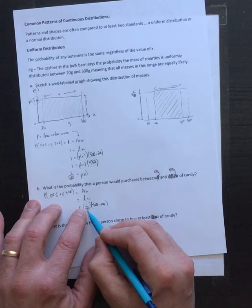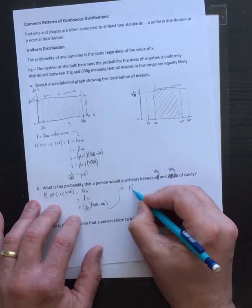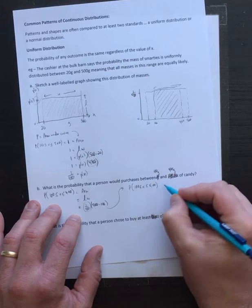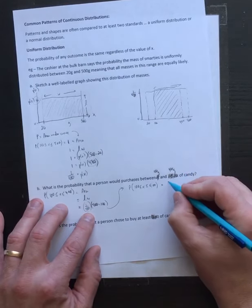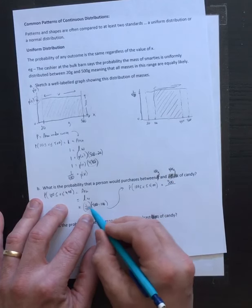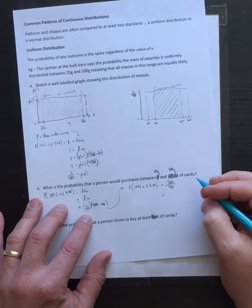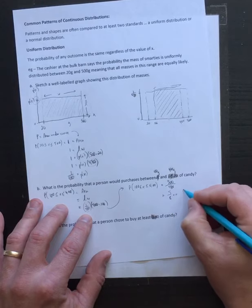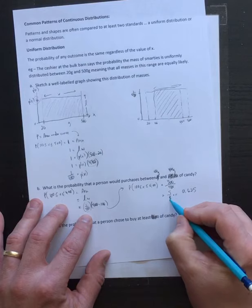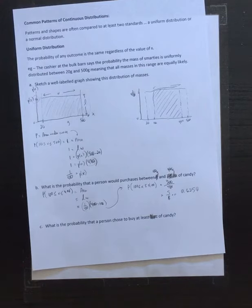This probability has to correspond to the units used here - if you put this in milligrams, the probability should be in milligrams as well. So the probability that x is between 100 and 400 is 400 minus 100, which is 300, multiplied by 1/480. That's 300 over 480, which reduces to 5/8 or 0.6250.